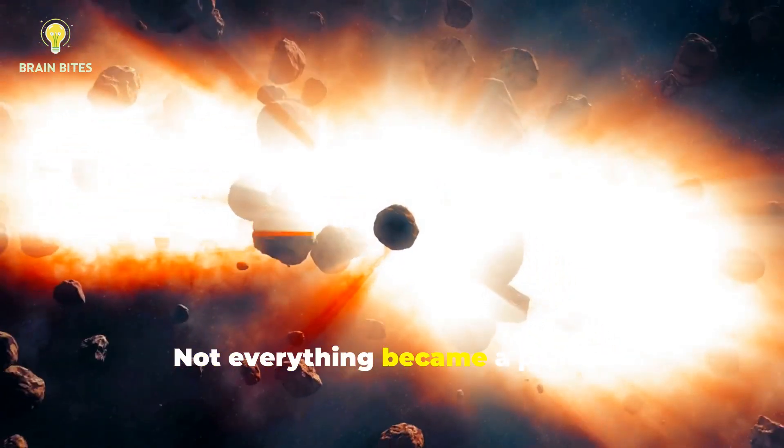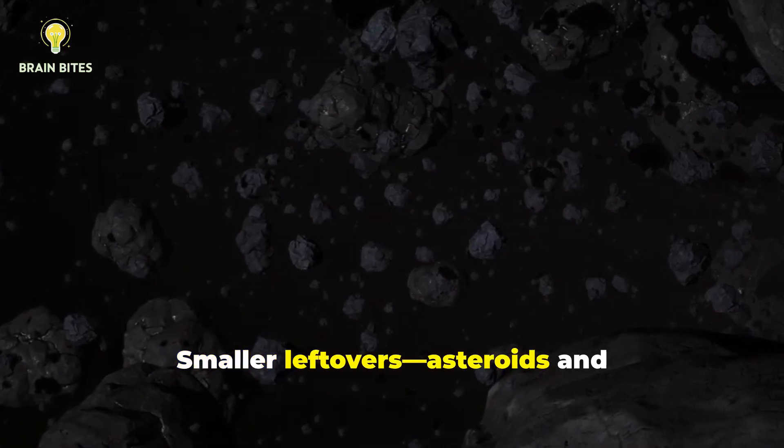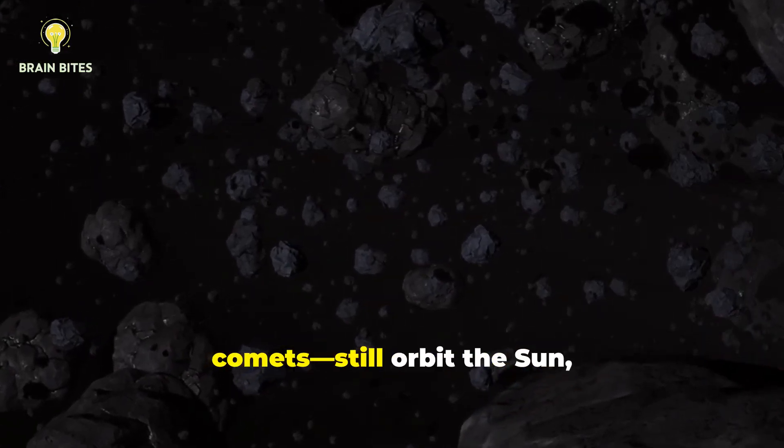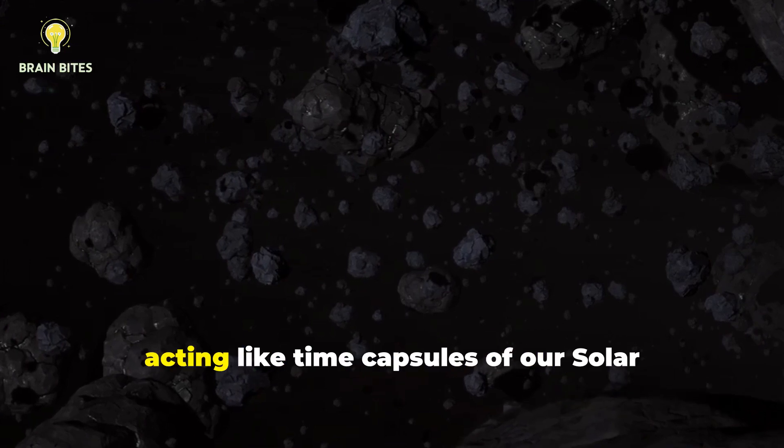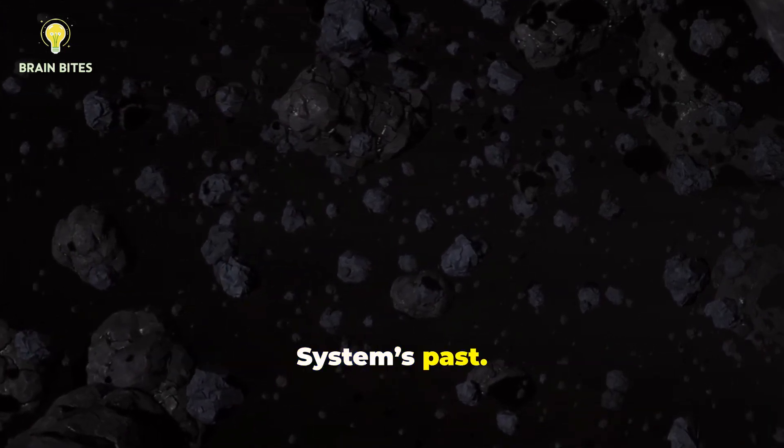Not everything became a planet. Smaller leftovers, asteroids and comets, still orbit the Sun, acting like time capsules of our solar system's past.